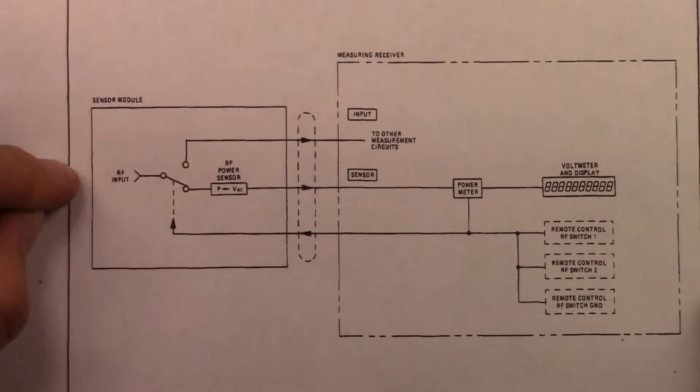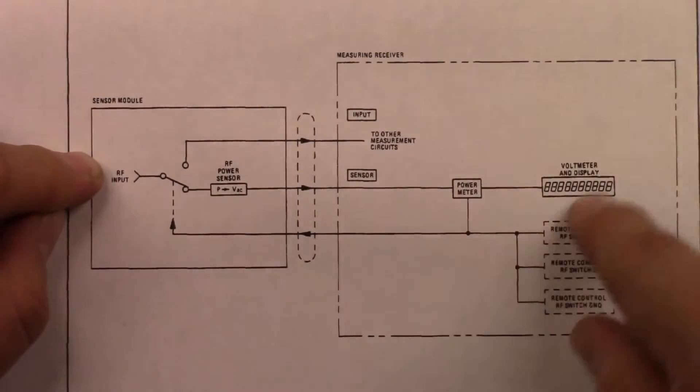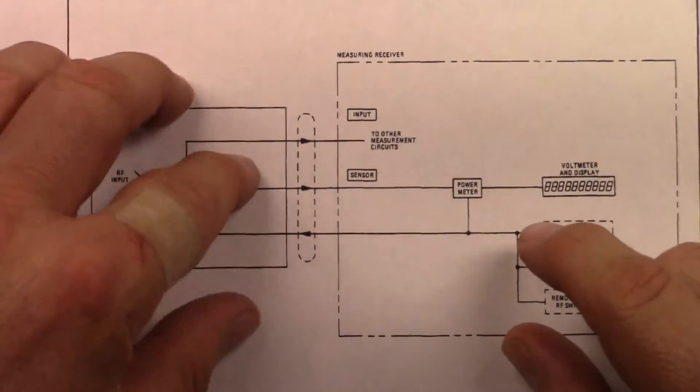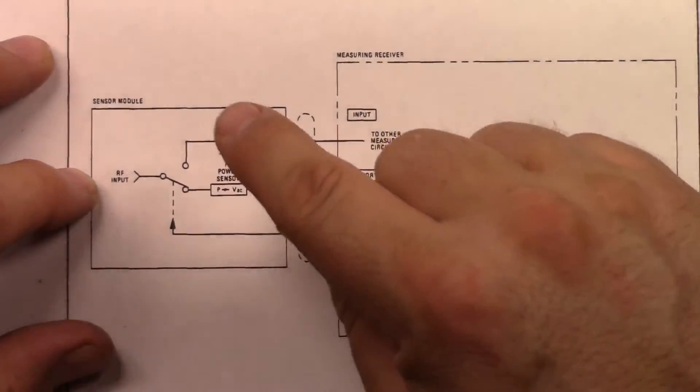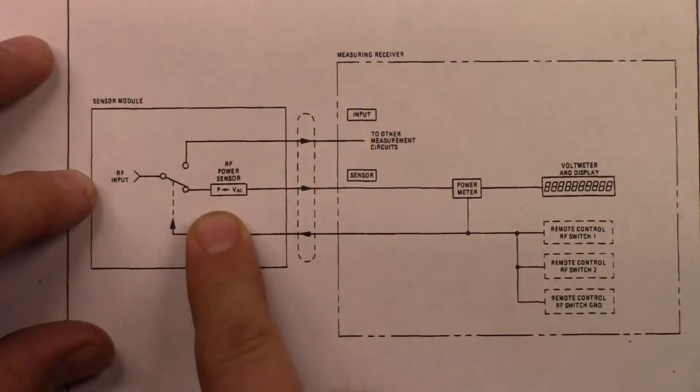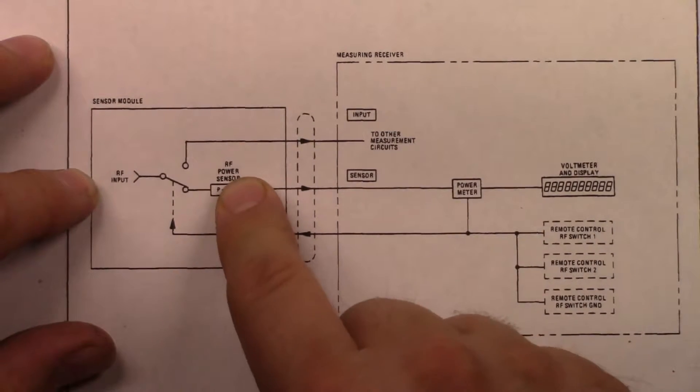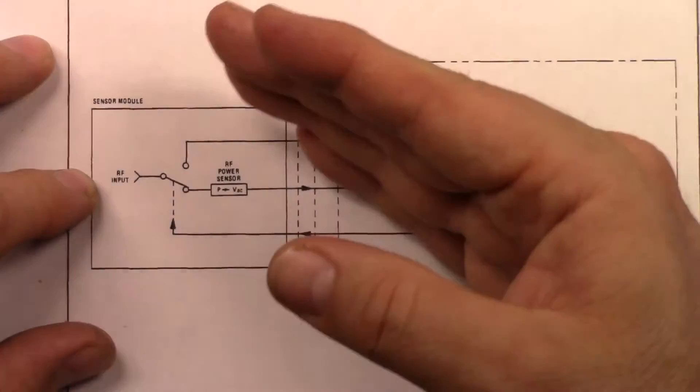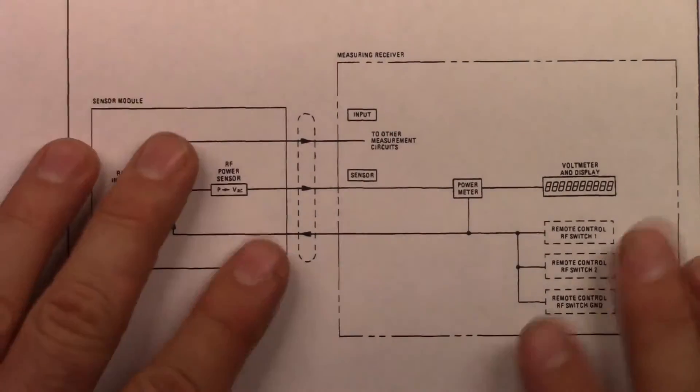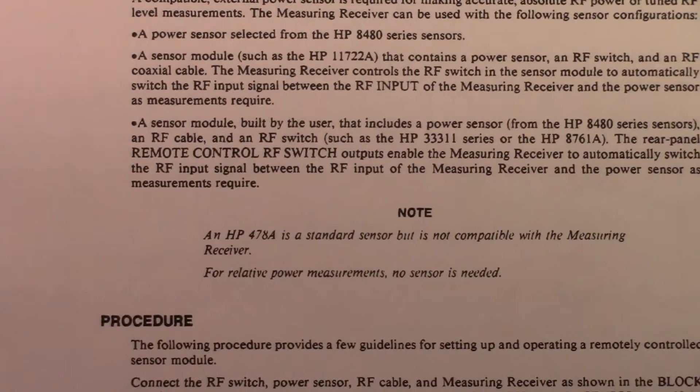You plug in an RF signal at the front of that sensor and then the measuring receiver, this is the 8902A, this is the 11722A receiver. Effectively the measuring receiver says I want to deal with power, so send me through your RF power sensor and give me that power information. I want to deal with frequency, so it flicks the switch over and the device flicks over and sends across just the frequency. So we can build exactly this system ourselves. Let's take a look at the components.